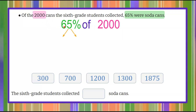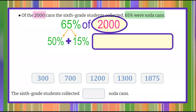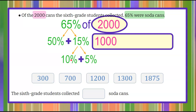We're going to divide this into an easier problem to work with. 65% we're going to consider as 50% plus 15%. We're focused on 50% of 2,000 — half of 2,000 is 1,000. Now we just need to add on the 15%. Let's break this down into an even simpler problem: 15% is 10% plus 5%. 10% of 2,000 — you just move the decimal point one space to the left — so that would be 200. And 5% is half of 10%, so half of 200 is 100. So 1,000 plus 200 plus 100 is 1,300.